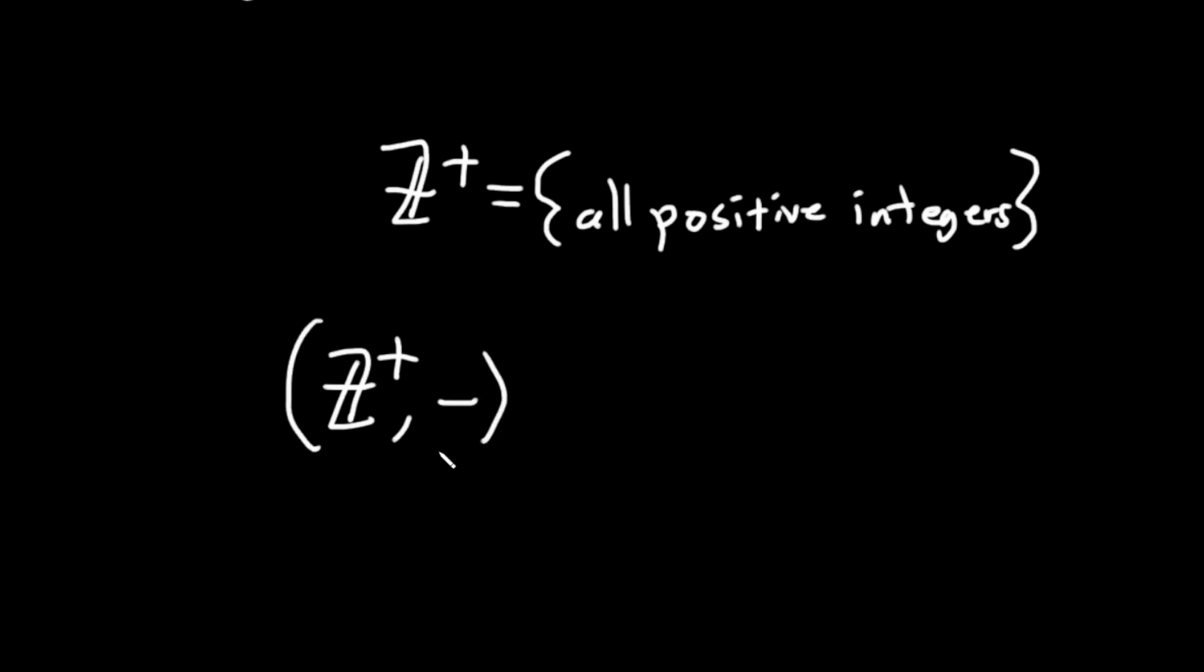No, it's not even closed under subtraction. Because if you take two minus five, these are two positive integers, you're subtracting them and you're going to get negative three, that's not in your set. So this set is not closed under subtraction. So there's no way it can be a group anyways.